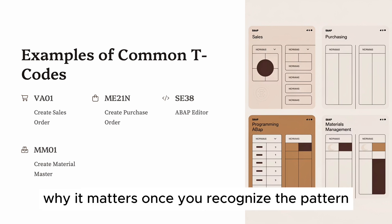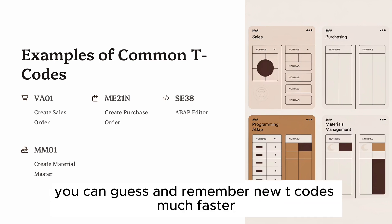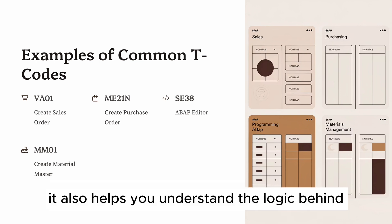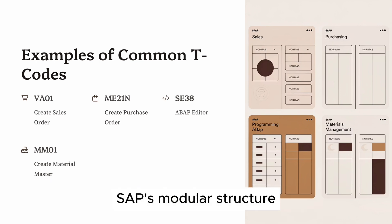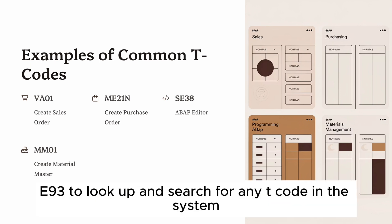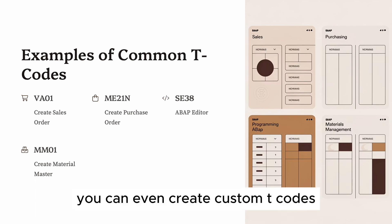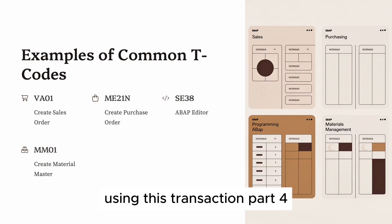Once you recognize the pattern, you can guess and remember new T codes much faster. It also helps you understand the logic behind SAP's modular structure. Use transaction SE93 to look up and search for any T code in the system — you can even create custom T codes using it.